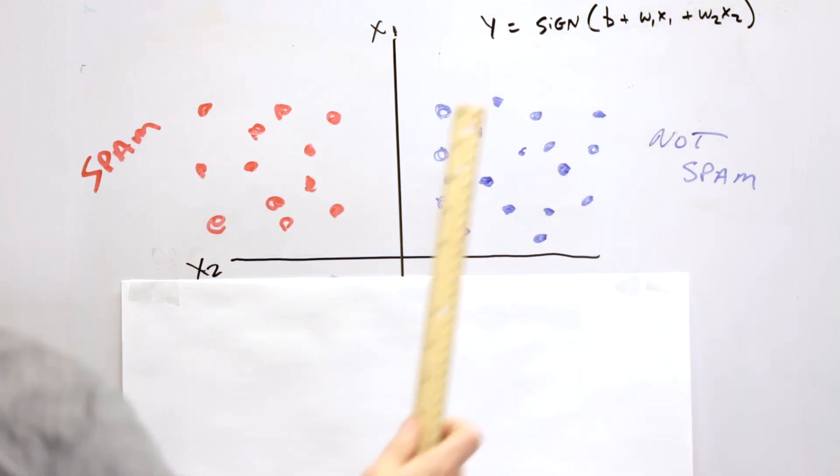And we've got a linear model here of w1x1, w2x2, and a bias term. Now, this is easy to fit, right?